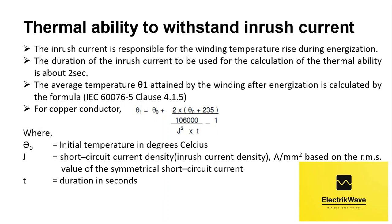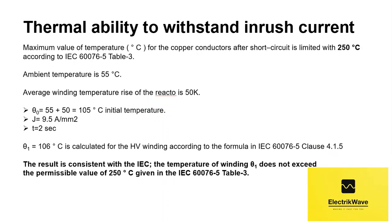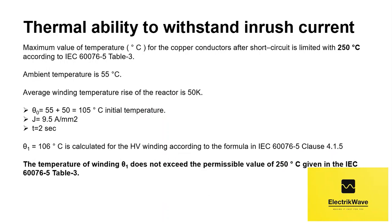Where theta_0 equals initial temperature in degrees Celsius; J equals short circuit current density, which is inrush current density in ampere per mm², based on the RMS value of the symmetrical short circuit current; T equals duration in seconds. Maximum value of temperature for the copper conductors after short circuit is limited to 250 degrees Celsius according to IEC 60076-5, table 3. Ambient temperature is 55 degrees Celsius.